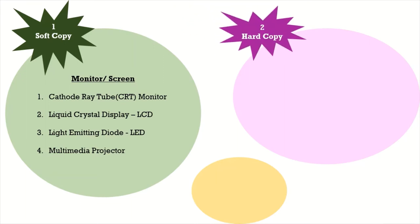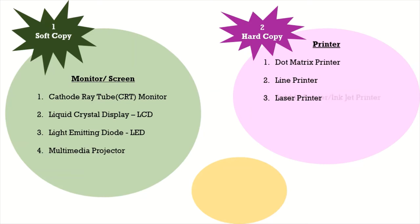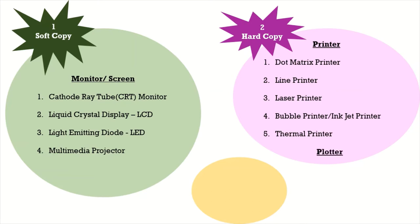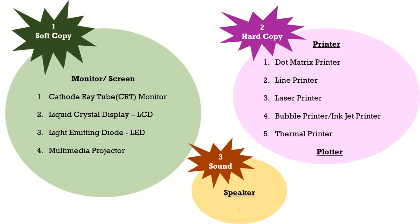Hard copy devices include printers: dot matrix printer, line printer, laser printer, bubble printer, inkjet printer, thermal printer, and plotter. Sound output devices include speaker and headphone.